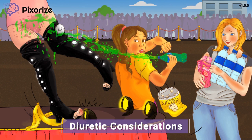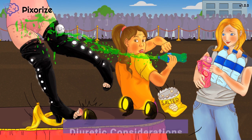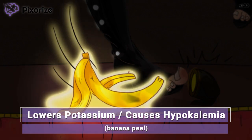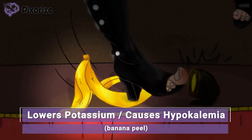Now that we know the clinical uses of thiazides, let's discuss the side effects. Someone left a banana peel on the catwalk, causing the model to slip. Here at Pixerize, bananas are our symbol for potassium because bananas have a lot of potassium. In this case, we have an empty banana peel low on the ground, because thiazide diuretics lower potassium.